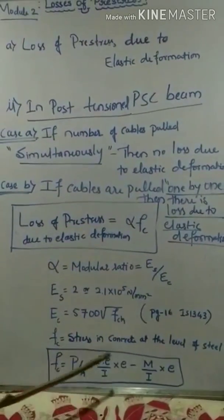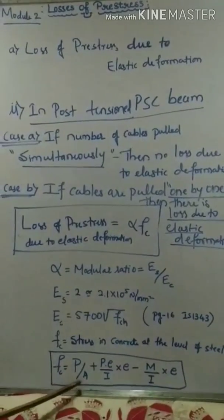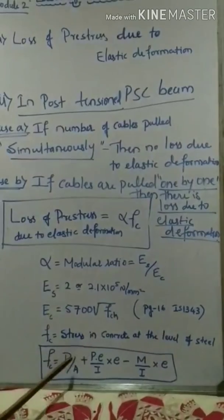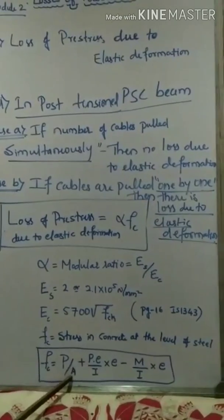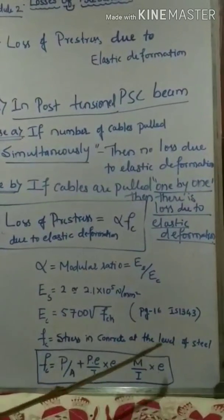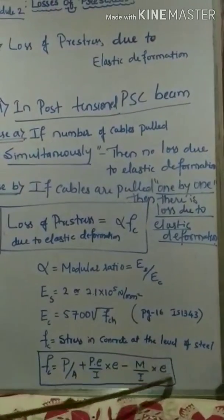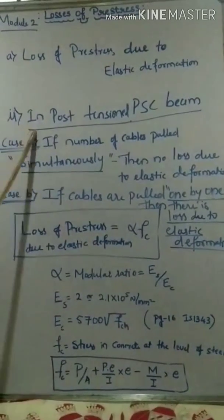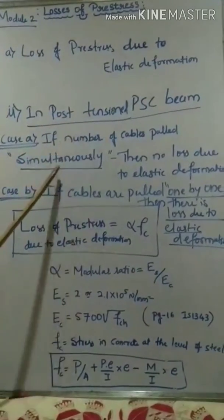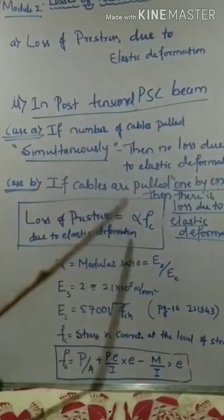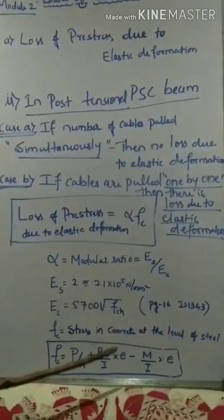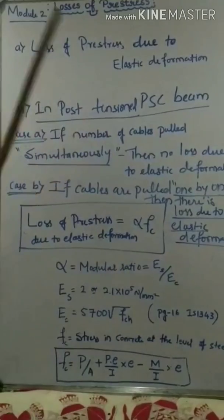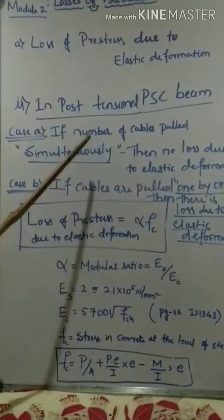The formula used for both pre-tensioned and post-tensioned beams is the same: loss = alpha × Fc, where alpha is the modular ratio and Fc is the stress in concrete at the level of steel, given by P/Ac + P·e²/I − M·e/I. Here, P is pre-stressing force, A is area of concrete, e is eccentricity, I is moment of inertia, and M is bending moment. For post-tensioned beams, check whether cables are stretched simultaneously (loss = 0) or one by one (calculate using the formula).